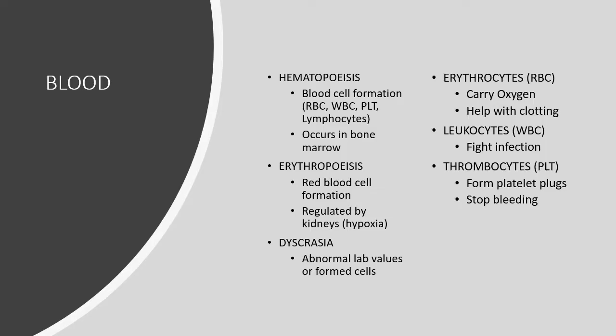First with hematology, let's review the components of the blood. Plasma is the fluid with all the electrolytes and proteins dissolved in it, but there are also cells circulating around: red blood cells, white blood cells, and platelets. There's a lot more specificity beyond that, but we're going to start there.